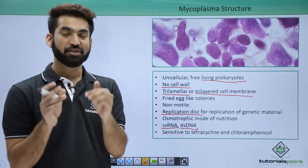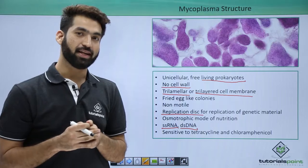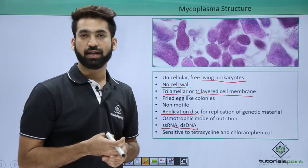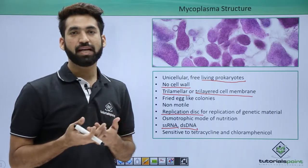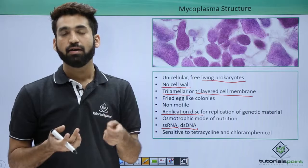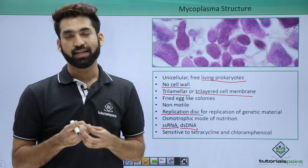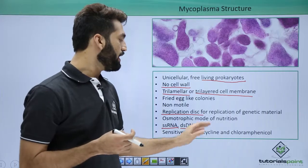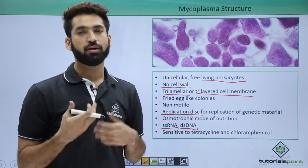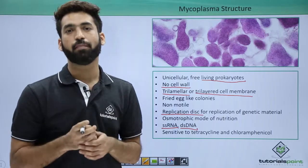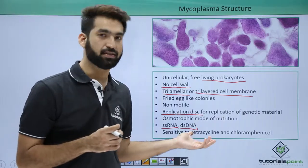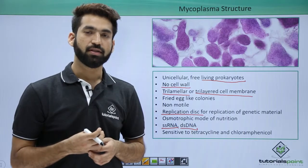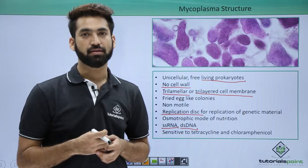They are not sensitive to penicillin because they lack the peptidoglycan layer, making them resistant to penicillin. The drugs that can kill mycoplasma are tetracycline or chloramphenicol, which inhibit metabolic activities. In the next session, we'll discuss different diseases caused by mycoplasma in plants and animals.